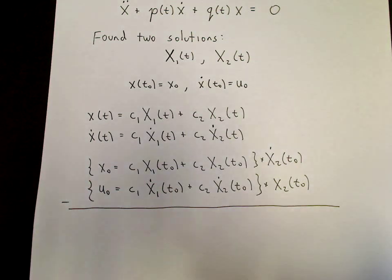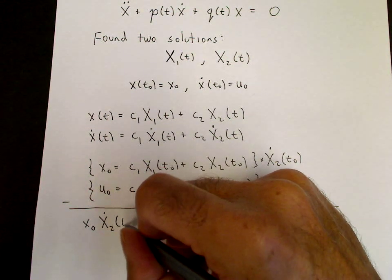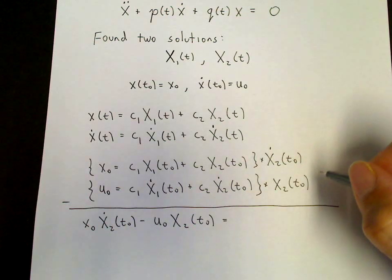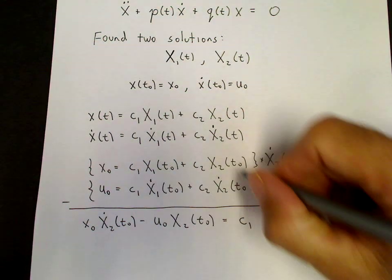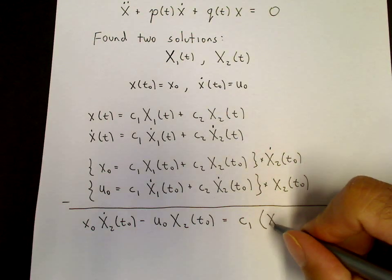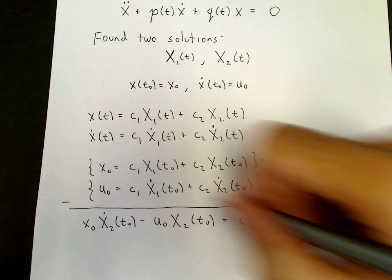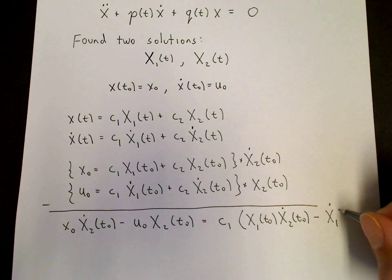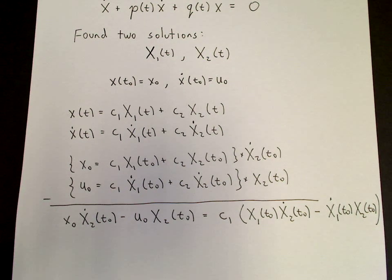So then we'll get x naught times x2 dot of t naught minus u naught times x2 of t naught equals, we're subtracting, so we have c1. x1, this x2 term goes away, so we have c1 times x1 of t naught times x2 dot of t naught minus x1 dot of t naught times x2 of t naught. And then we just solve this equation for c1.